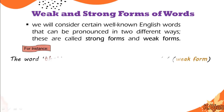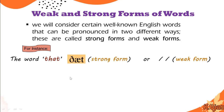For instance, the word 'that' — in the strong form, we use the phoneme /æ/. And in the weak form, we use /ə/ — 'that.' So this is the difference between the strong form and the weak form.